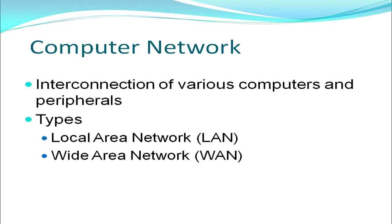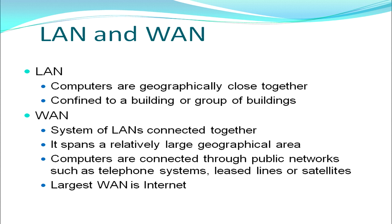Next we move on to computer networks — an interconnection of various computers and peripherals. Broadly speaking, networks can be of two types: Local Area Network or LAN and Wide Area Network or WAN. A LAN is a network spanning a smaller area where computers and peripherals are geographically close together, confined to a building or group of buildings. A WAN connects a large geographical area — various small networks connected together form a WAN, using public networks such as telephone systems, leased lines, or satellites.